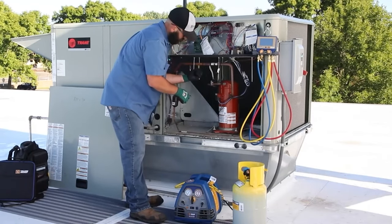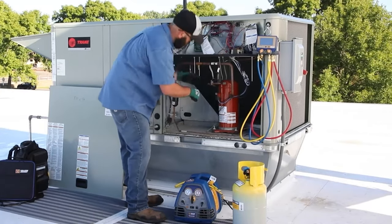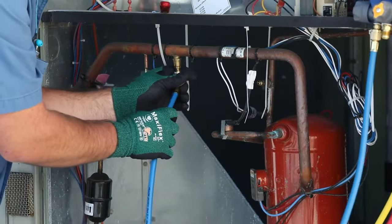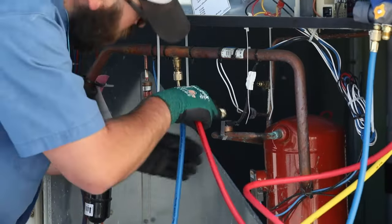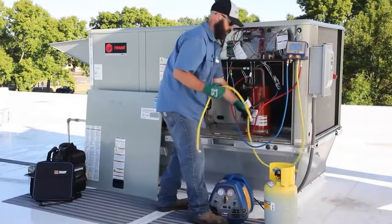Remove the service port caps and connect the manifold hoses to the corresponding service ports: blue for low side, red for high side. Then connect the manifold charging hose to the suction port of the recovery machine.